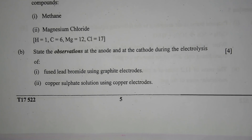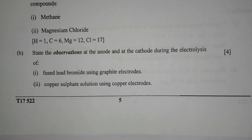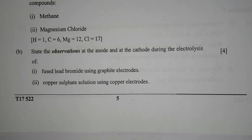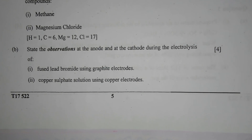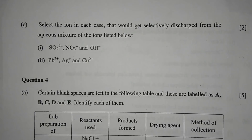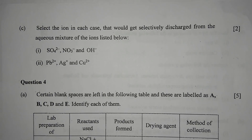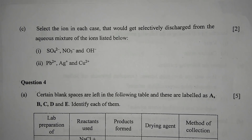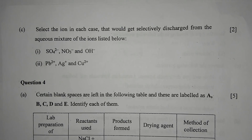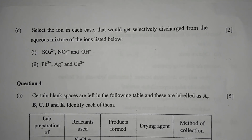Number 2 — copper sulfate solution using copper electrodes: at the cathode, reddish brown copper is deposited, whereas at the anode nothing gets deposited because copper keeps getting dissolved into the electrolyte.